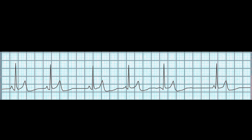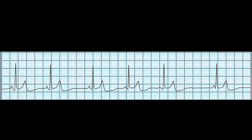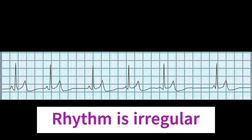Now, let's take a look at the step-by-step process to analyze multifocal atrial rhythm or wandering atrial pacemaker on an EKG strip. Step 1: Check the regularity of the rhythm. Using your EKG caliper, measure the R-to-R intervals and determine if they are all equal or consistent. Multifocal atrial rhythm is an irregular rhythm, so make sure the distance between each P-wave varies.